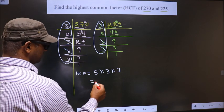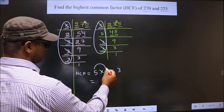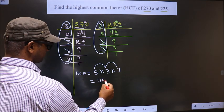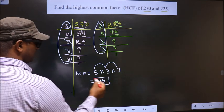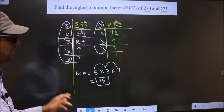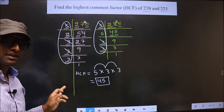So let us multiply. That is 5 into 3, 15 into 3, which is 45. So this is our HCF. Am I clear?